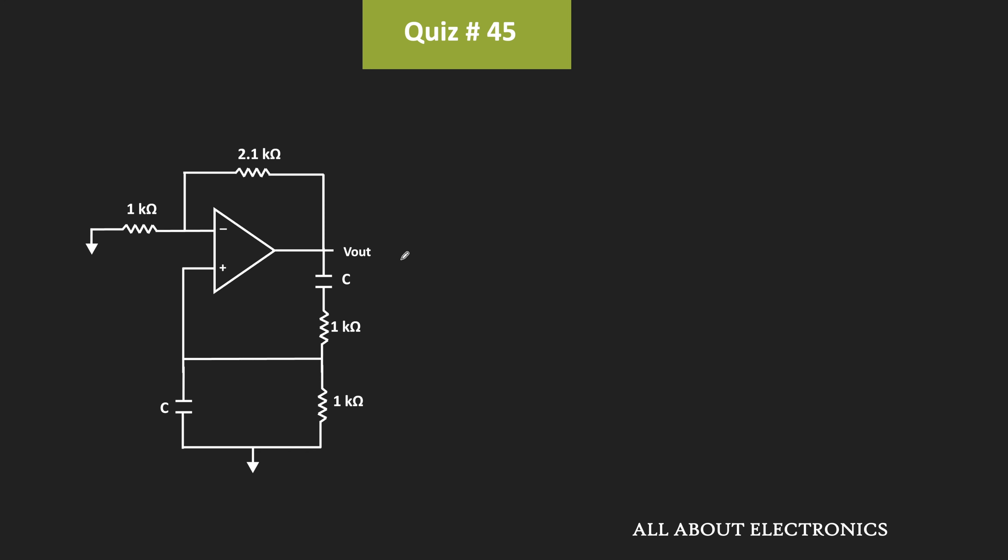If you look at this circuit, it is the Wien Bridge Oscillator. In this circuit, C1 equals C2 equals C, while R1 equals R2 equals 1 kΩ.